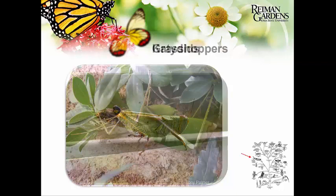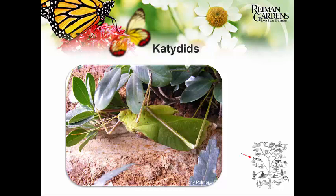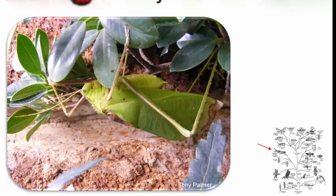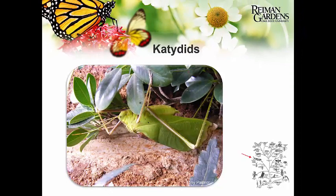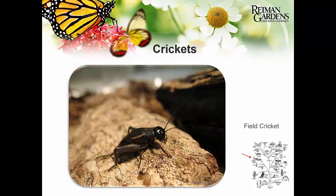Closely related to grasshoppers are katydids — essentially the same general body layout, with the big difference being their wing structures. Katydids are wonderful at camouflage, blending in with their surroundings. Some have wing structures that make them look like dead leaves on their backs, or they blend in to look just like a leaf, even behaving like leaves while sitting and feeding. Not as big jumpers as grasshoppers, but another large species with wonderful wings.